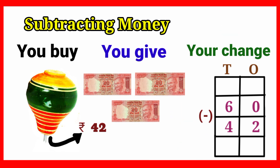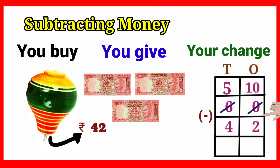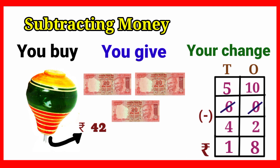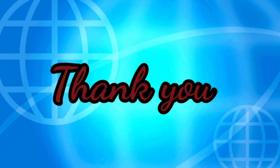From 60, subtract 42 to find the remaining change. First, ones place: 0 minus 2 — borrow 10, so 10 minus 2 equals 8. Ones place answer is 8. Then tens place: after borrowing, 6 becomes 5. 5 minus 4 equals 1. Tens place answer is 1. So the remaining change is 18 rupees. How are you? Clear, children? Thank you, children. See you next class.